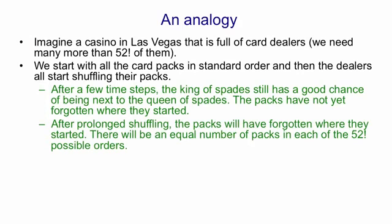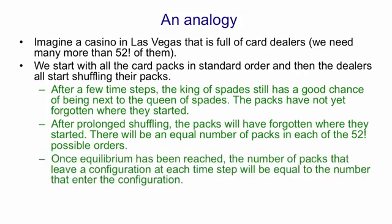In fact, in this example there'll be an equal number of packs in each of the 52 factorial possible orders. Once this has happened, if we carry on shuffling there'll still be an equal number of packs in each of the 52 factorial orders. That's why it's called equilibrium—it's because the fraction in any one configuration doesn't change, even though the individual systems are still changing.